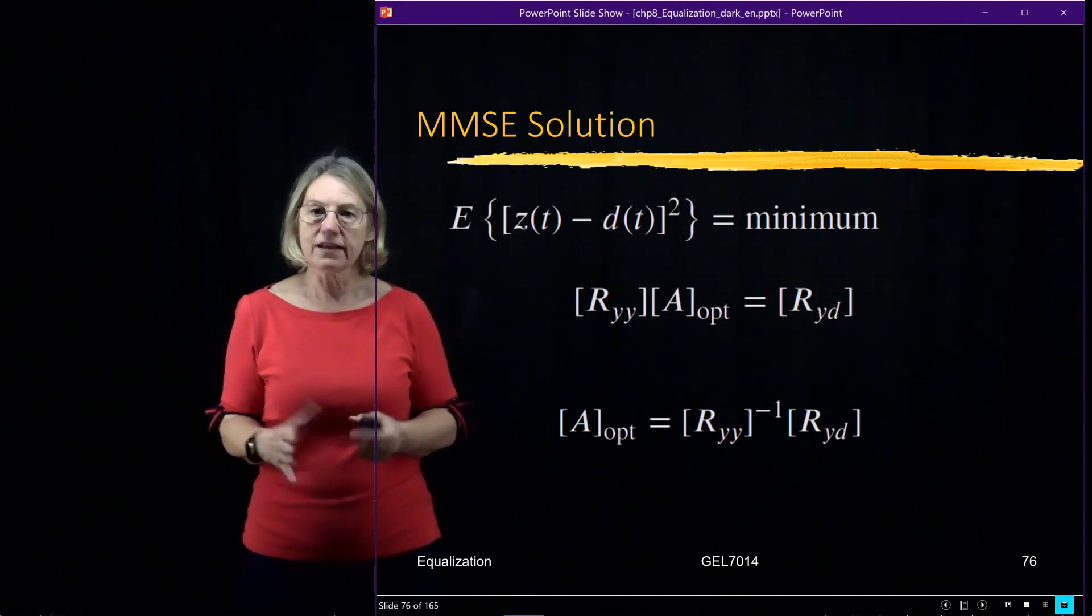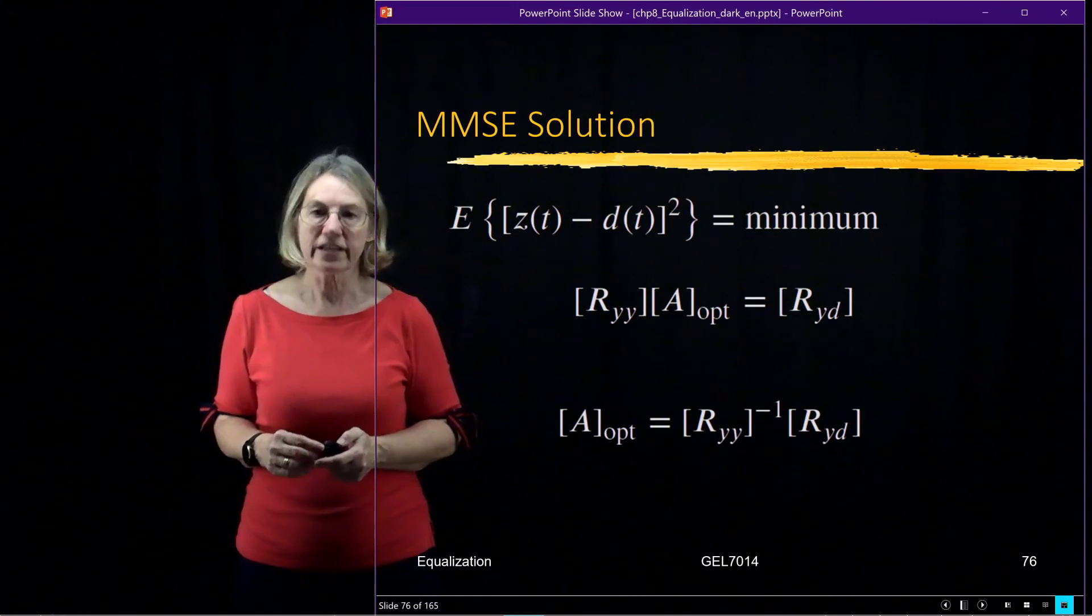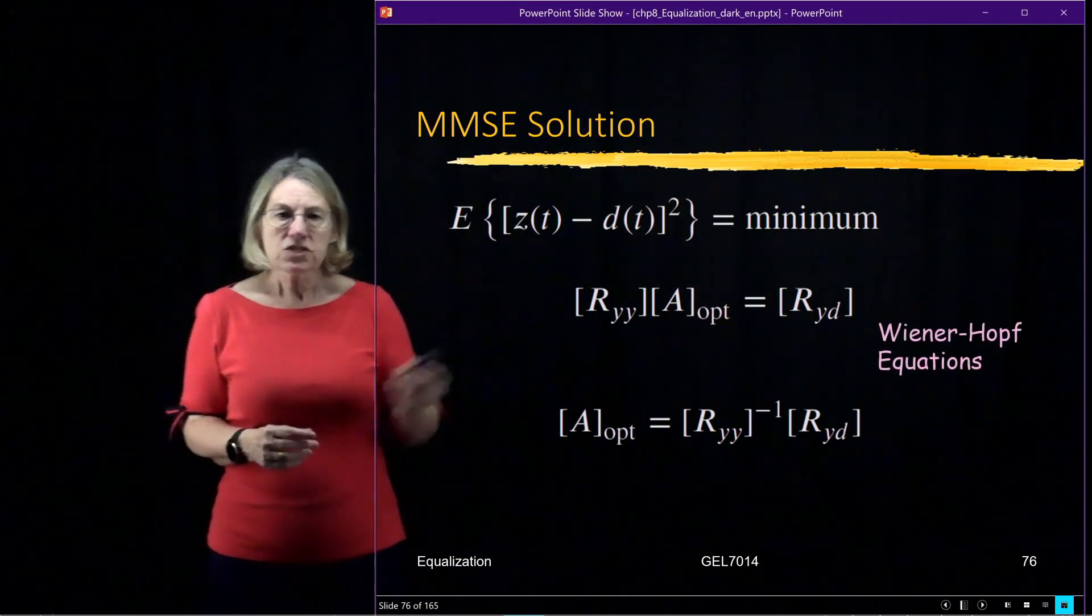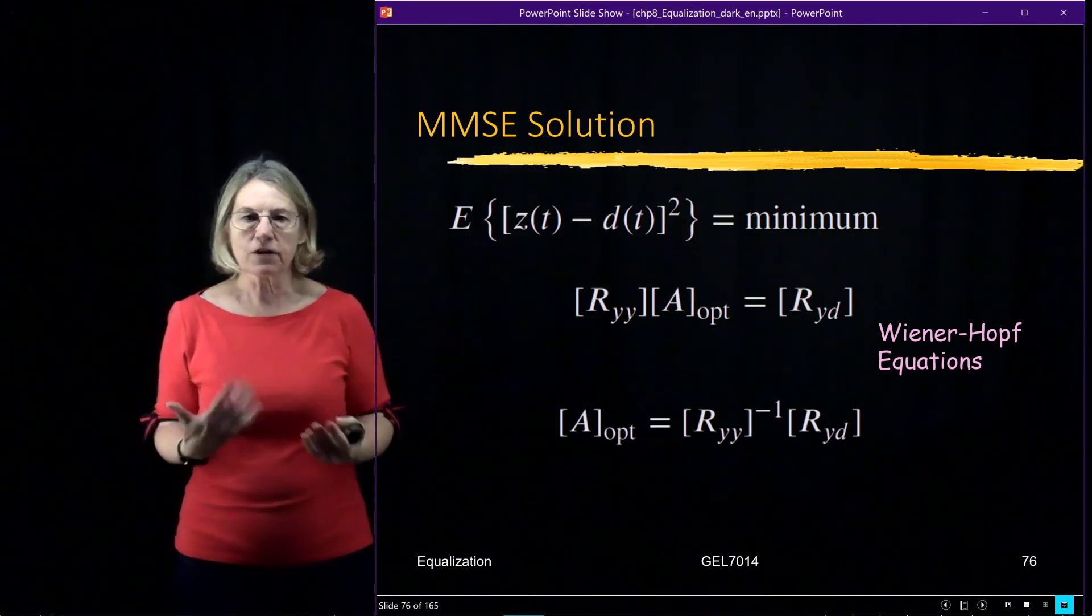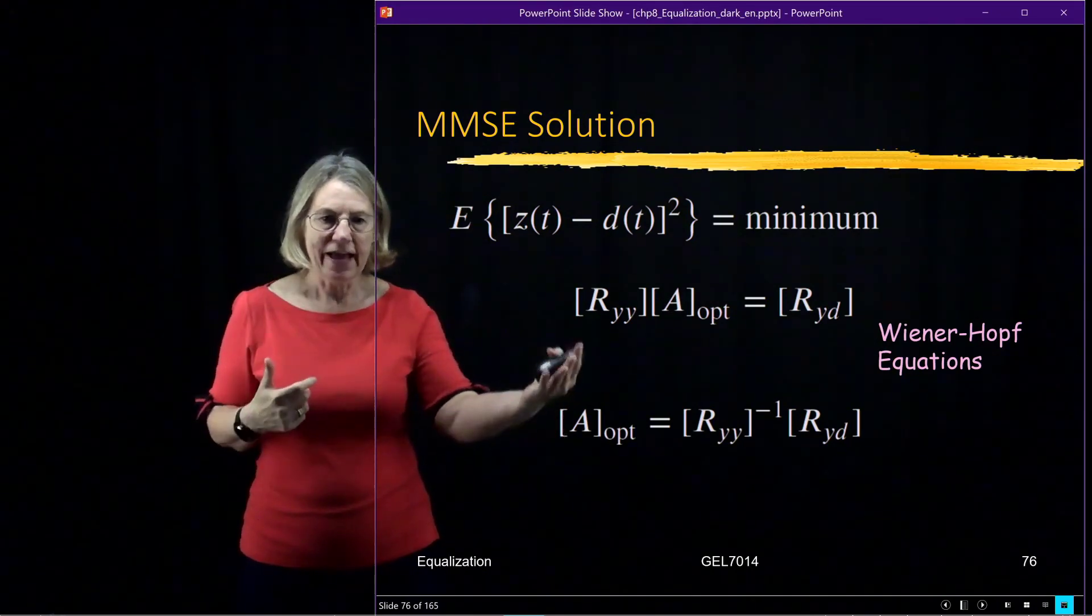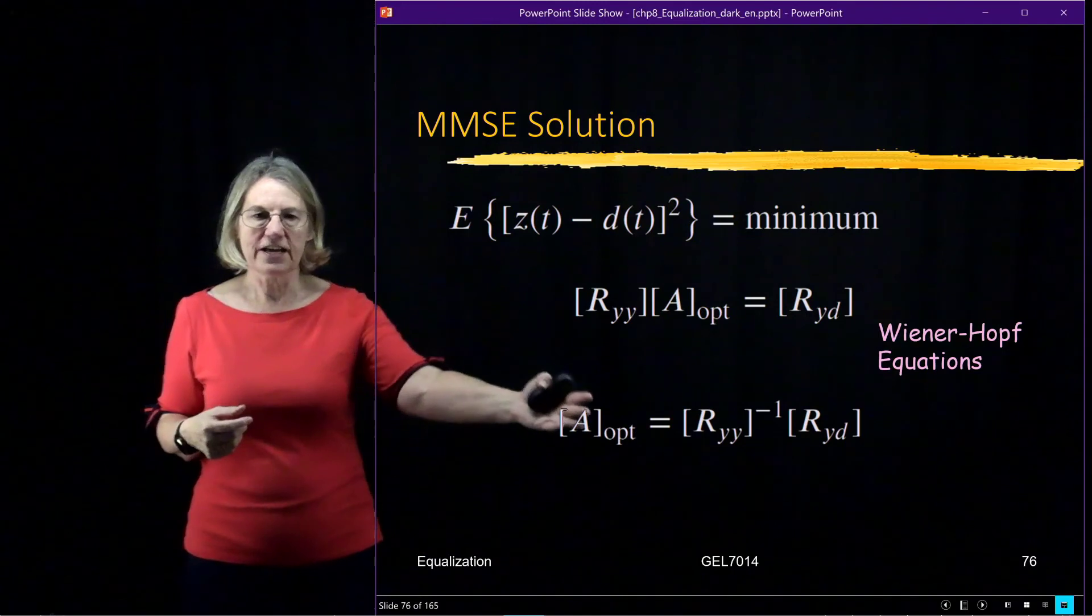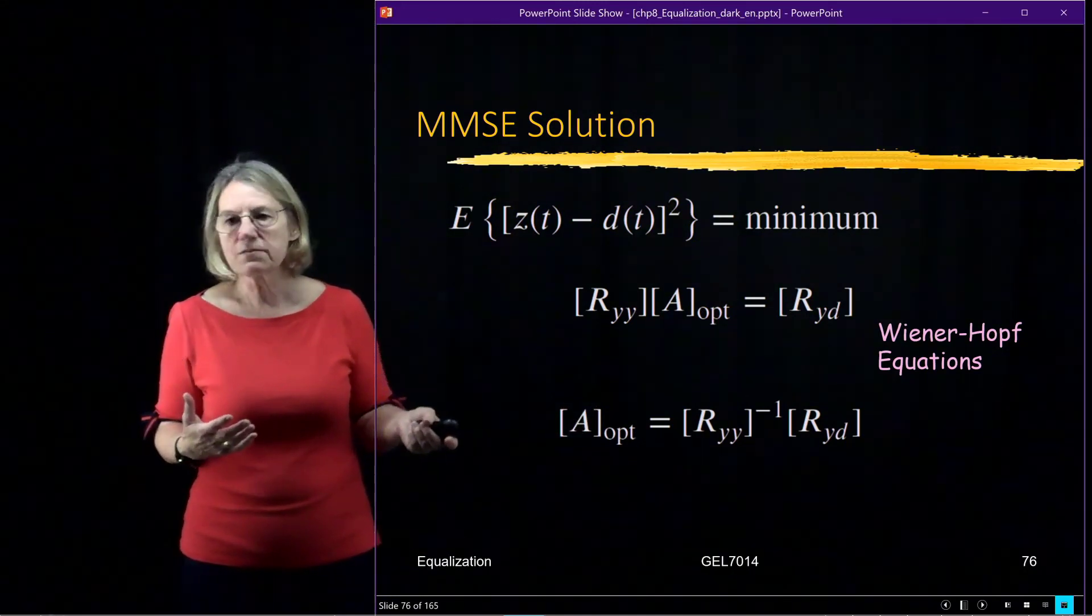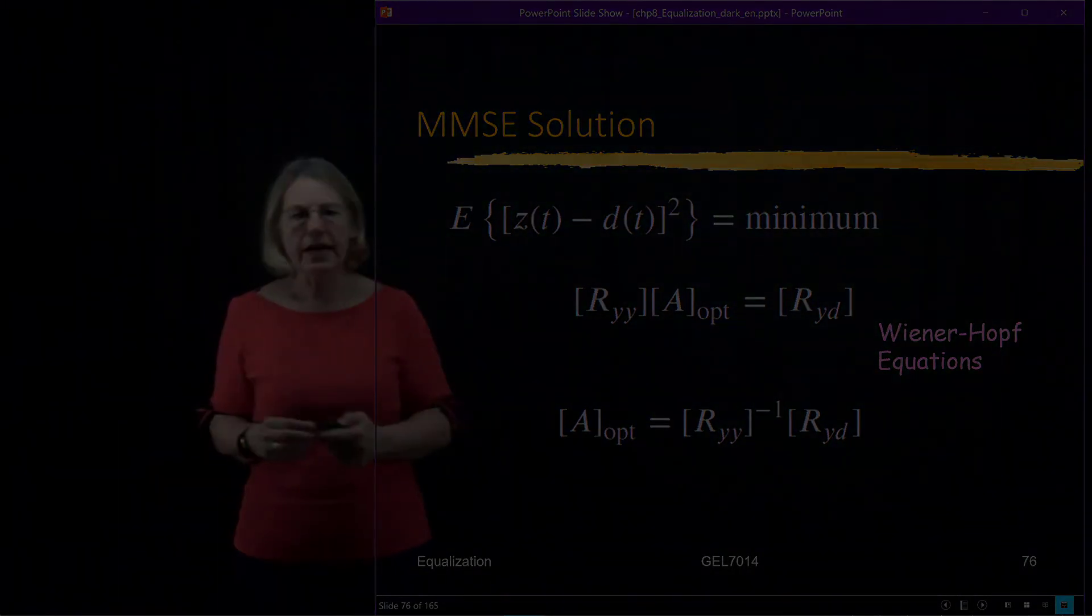So this is assuming that I have all the statistics on the channel, how correlated they are with time, that allows me to calculate what the optimal coefficients are. This is known as the Wiener-Hopf equations. So it's a system of equations, a 2N plus 1 individual equations that I can solve in order to find the optimal coefficients. And so this is a system of equations which comes up often in communications and in other applications.